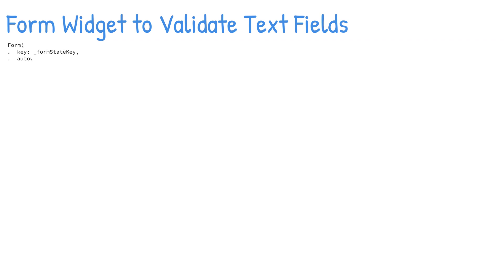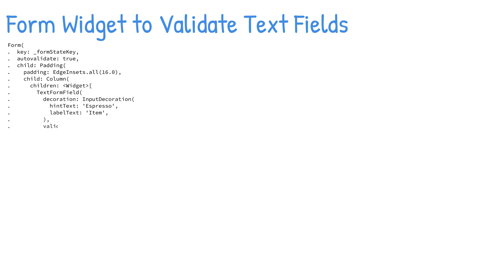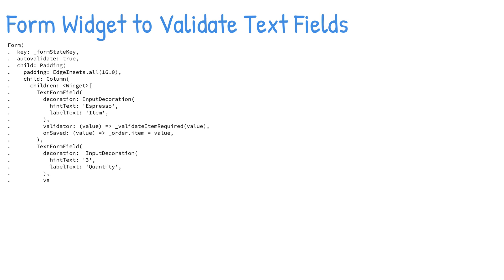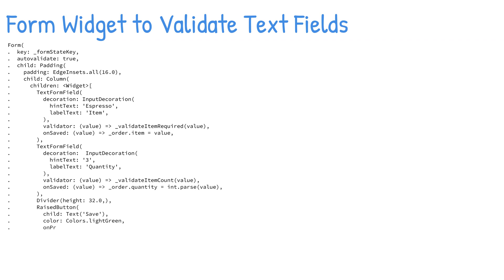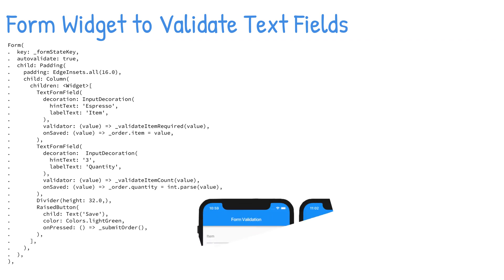There are different ways to use text field widgets to retrieve, validate, and manipulate data. The form widget is optional, but the benefit of using a form widget is to validate each text field as a group. You can group text form field widgets to manually or automatically validate them. The text form field widget wraps a text field widget to provide validation when enclosed in a form widget.